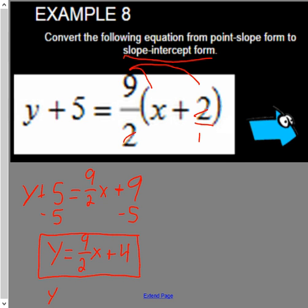You always want to do a check at the end to say, does it look like y equals mx plus b? This does, so this is our slope-intercept form.